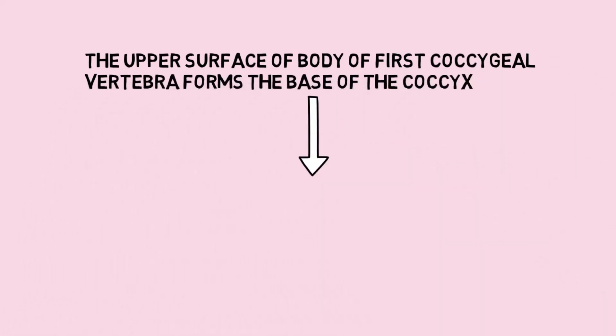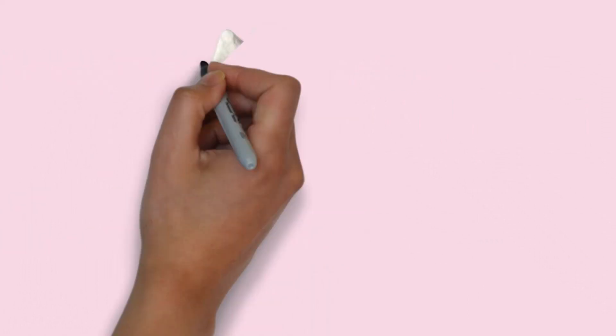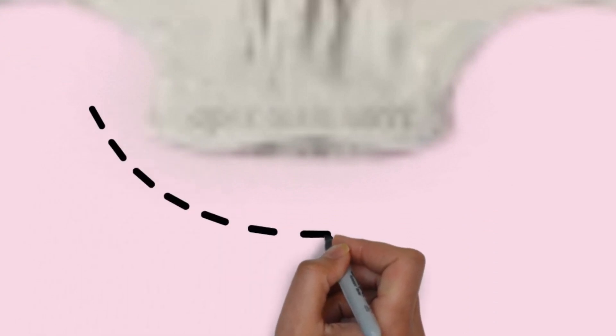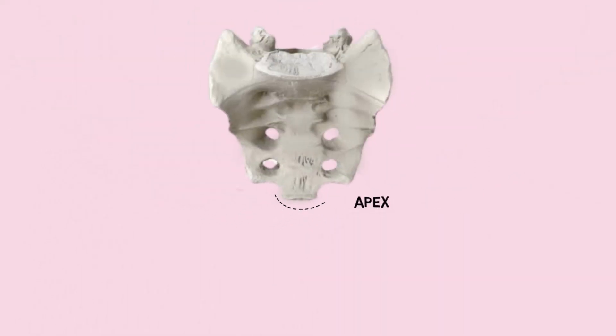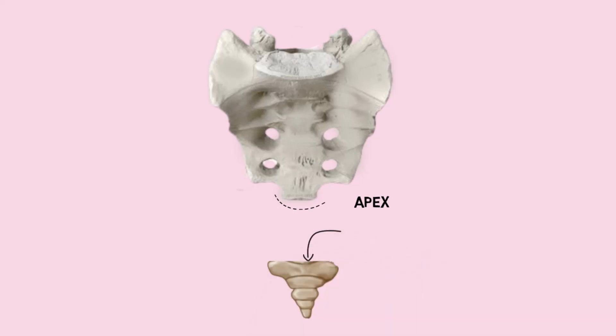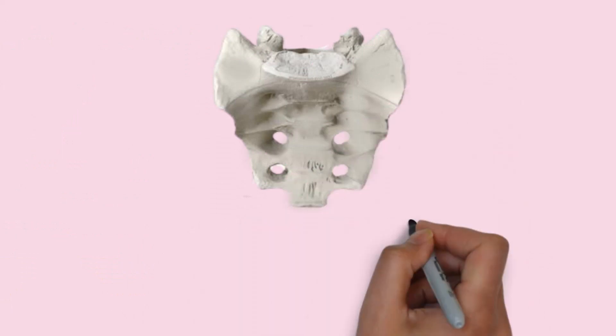The base articulates with the apex of sacrum. This is the sacrum and this is the apex of sacrum where the coccyx articulates. This is the coccyx and this is the upper surface of the first coccygeal vertebra, that is the base. Let's see how it articulates with the apex of sacrum — this is the point of attachment.